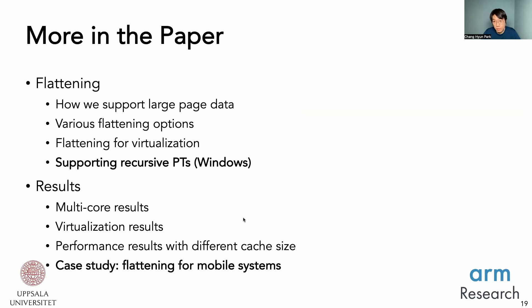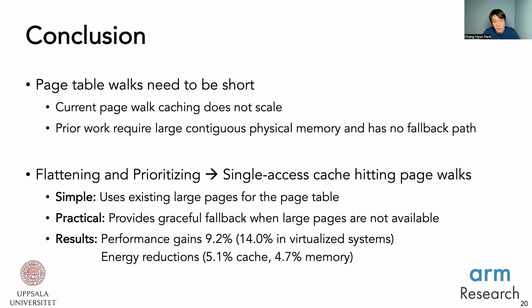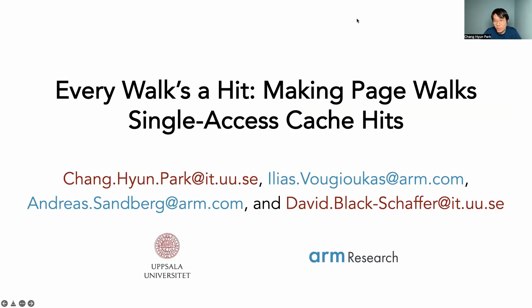There is more in the paper we couldn't cover due to time, including supporting recursive page tables as Windows does, and a case study. To conclude: page table walks need to be quick for performance. Prior work required large contiguous physical memory without a fallback path. We proposed flattening and prioritizing to achieve single-access cache-hitting page walks. Our approach is simple and practical — it reuses existing OS large pages and provides graceful fallback when the OS runs out of large pages. We find performance gains and energy reductions using both flattening and prioritizing. Thank you for your attention.